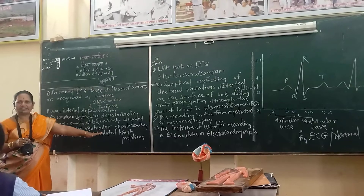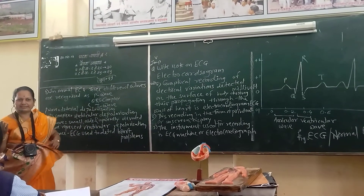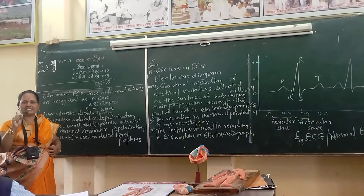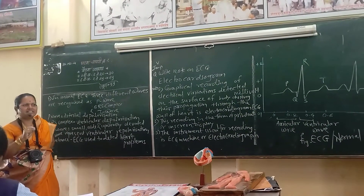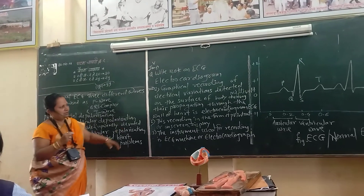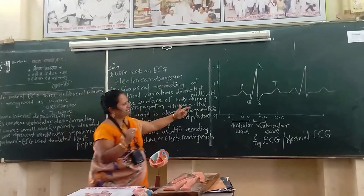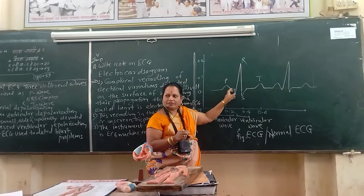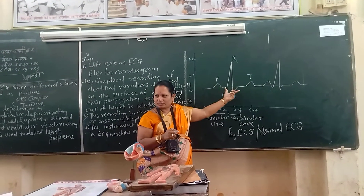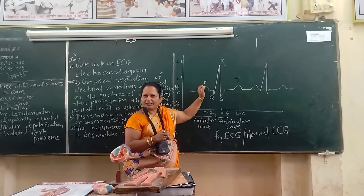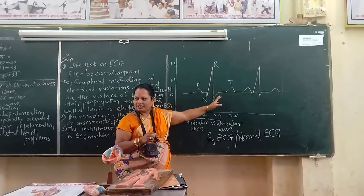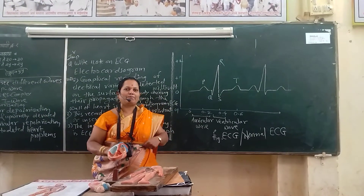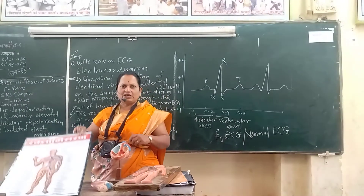ECG is used to detect heart problems such as cardiac arrest and angina pectoris, which means chest pain. At that time, the ECG is recorded and heart surgeons or heart specialists detect heart problems from the abnormal waves — whether abnormal in the P wave, QRS complex, or T wave. Heart problems are detected with the help of ECG.